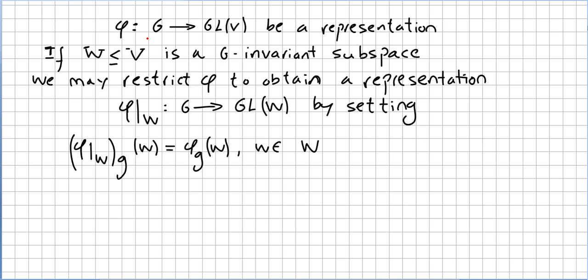So let phi, taking us from the group G to the general linear group GL(V), be a representation. If W is a subspace, a vector subspace of V, so if W is a G-invariant subspace - please check one of the previous videos for the concept of G-invariant - if this subspace is a G-invariant subspace, we may restrict the mapping phi to obtain a representation.